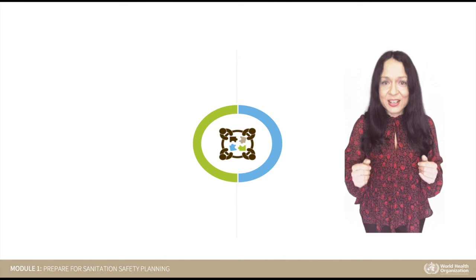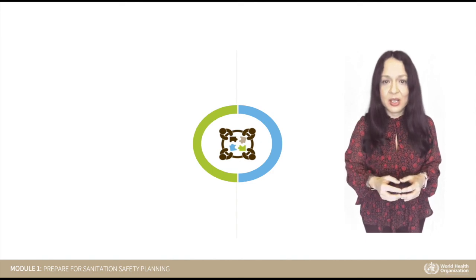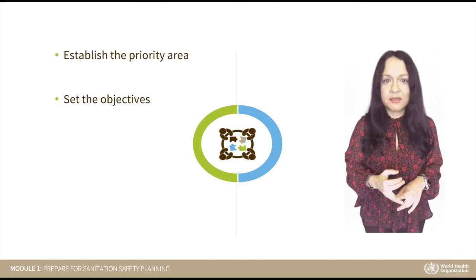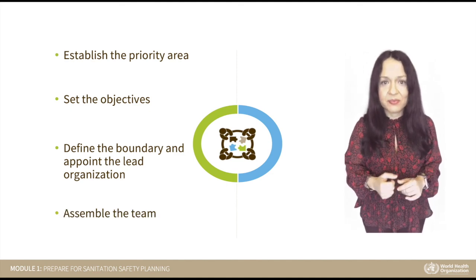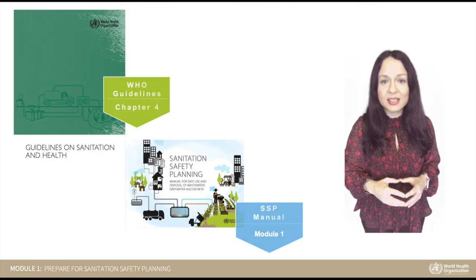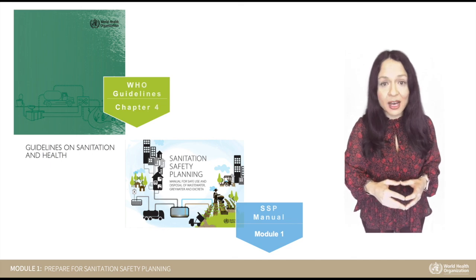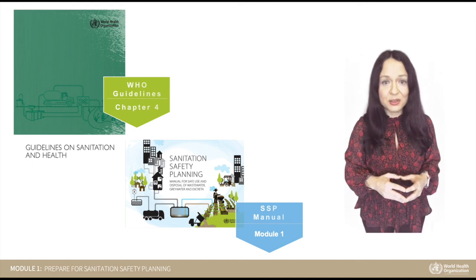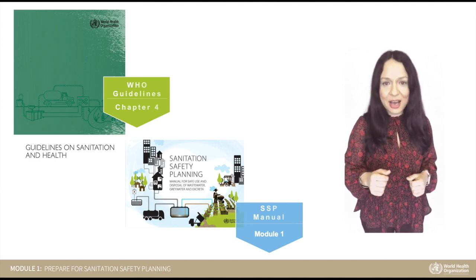Great! We have now completed Module 1 of the SSP methodology: Prepare for SSP. You have learned how to establish the priority area, set the objectives, define the boundary, and appoint the lead organization and assemble the team. I recommend downloading the 2018 WHO guidelines and learning more about sanitation planning in Chapter 4. You should also download your SSP manual and revise Module 1. In the following lecture, we will continue with the Sanitation Safety Planning Methodology and specific Module 2: describe the sanitation system. Thanks for watching and happy SSP!